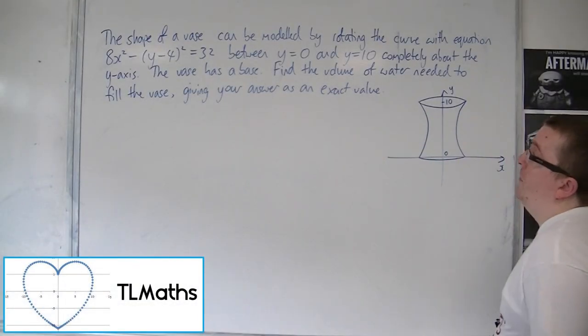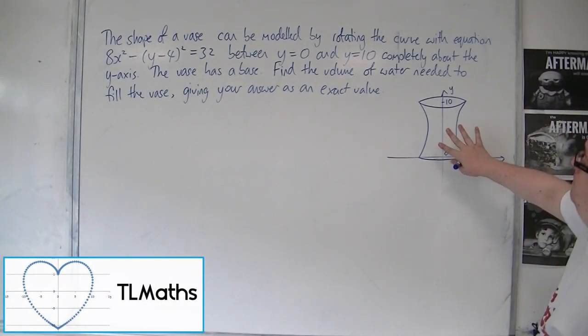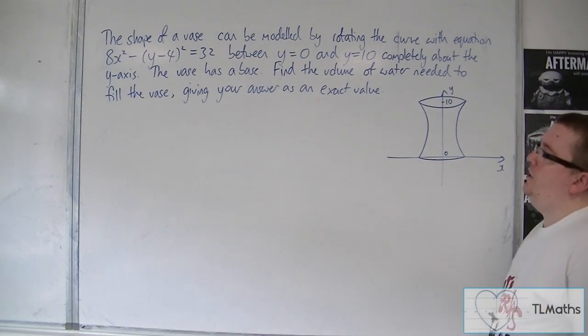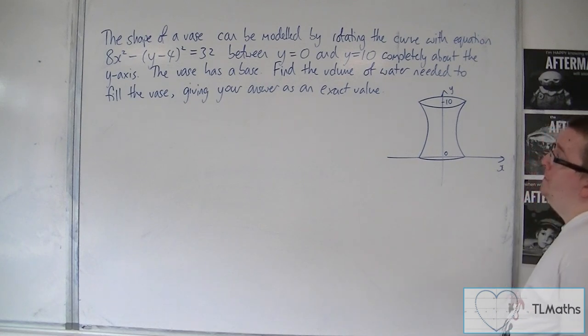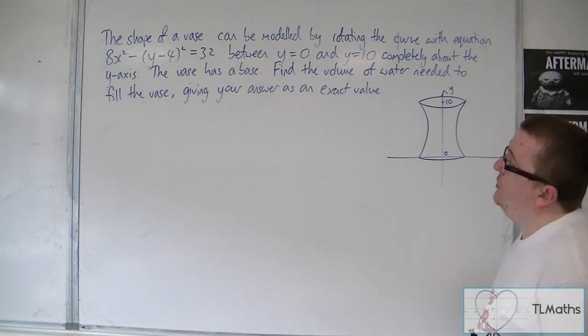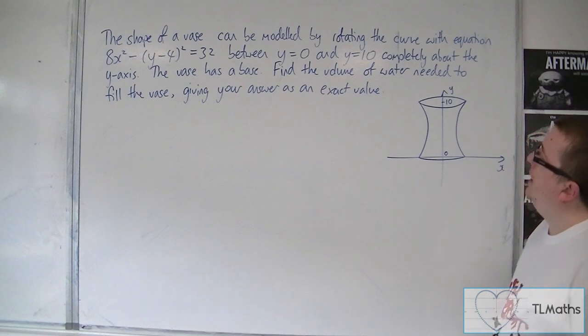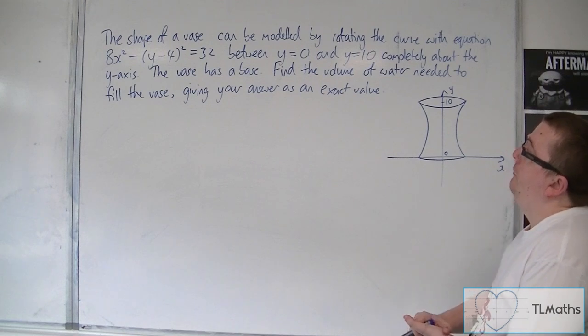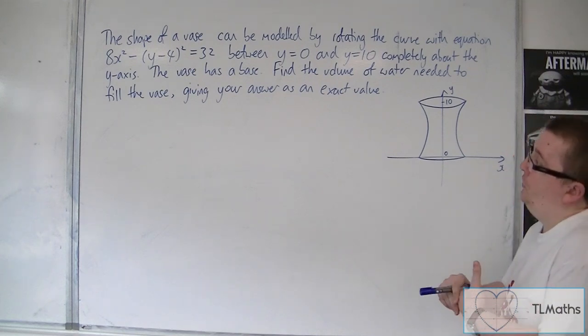Okay, so the shape of a vase pictured here can be modeled by rotating the curve with equation 8x² - (y-4)² = 32 between y = 0 and y = 10, completely about the y-axis. The vase has a base. Find the volume of water needed to fill the vase.